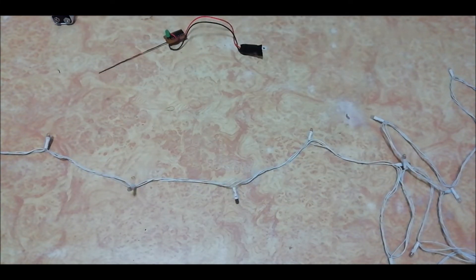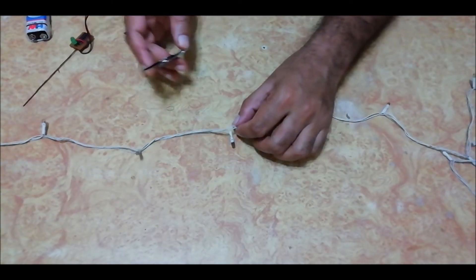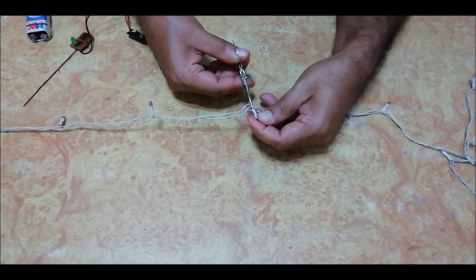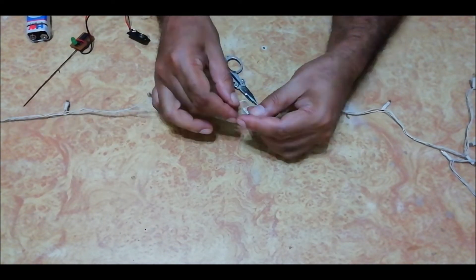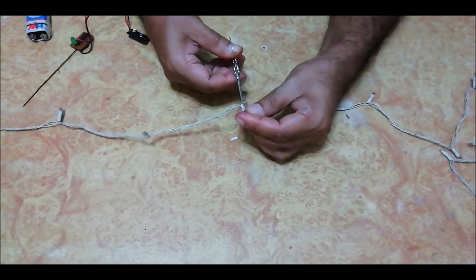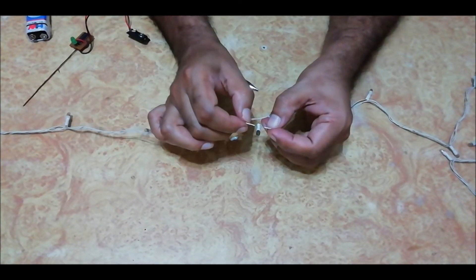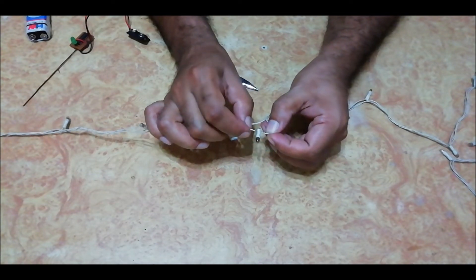First of all, switch off the power supply to this series bulb light. Now cut the outer sleeve of this bulb. These are the two contact points of this bulb.